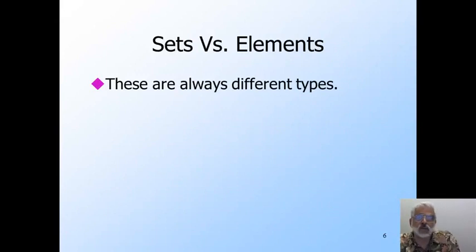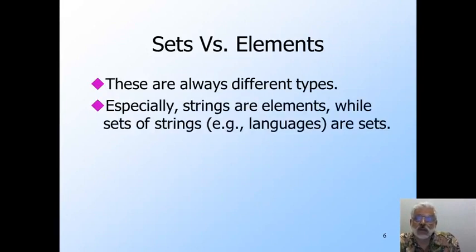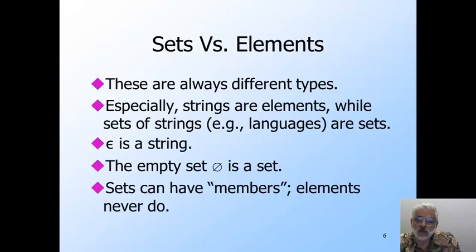Now let's move on to sets and elements. Elements come in many different types. For example, integers, strings, characters, and so on. Sets can have elements as members. So, for example, a language in the world of automata theory is a set of elements of type string. That is, the type of a language is set of strings. And remember that epsilon is a string, while the empty set is a set. There is a notion of membership that relates a set to the members of that set. A set can have members. The element types like string do not have members.